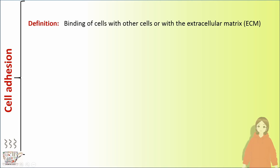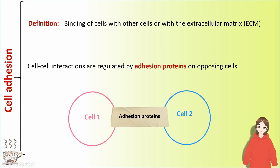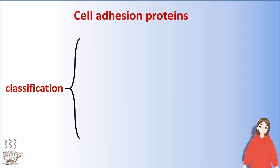Binding of cells with other cells, or with the extracellular matrix (ECM), is called cell adhesion. Cell-to-cell interactions are regulated by adhesion proteins on opposing cells. Cell adhesion proteins can be divided into four subgroups.